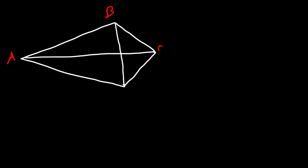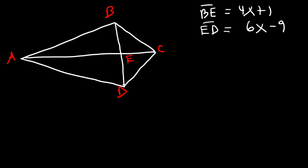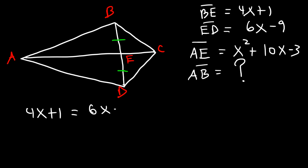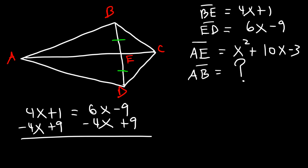For the next problem, kite ABCDE has E as the intersection point. BE equals 4x plus 1, ED equals 6x minus 9, and AE equals x² plus 10x minus 3. Find the measure of AB. Since E is the midpoint of BD, BE and ED are congruent, so we set 4x plus 1 equal to 6x minus 9.